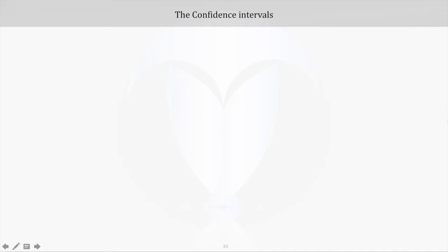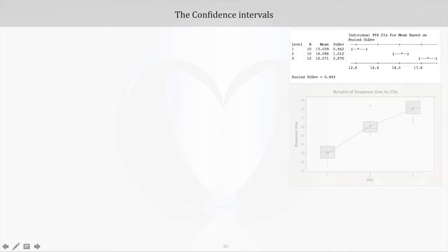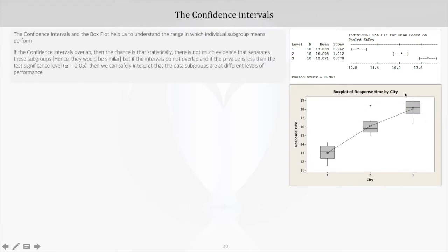The next important event to interpret in ANOVA are the confidence intervals. The confidence intervals and the box plot help us understand the range in which individual subgroup means vary or perform. The way we interpret is to check if the confidence intervals overlap with each other or not.